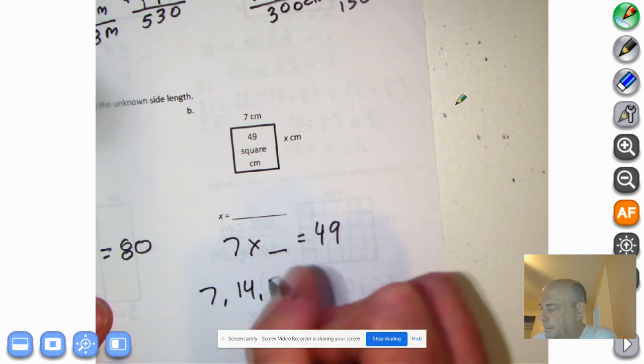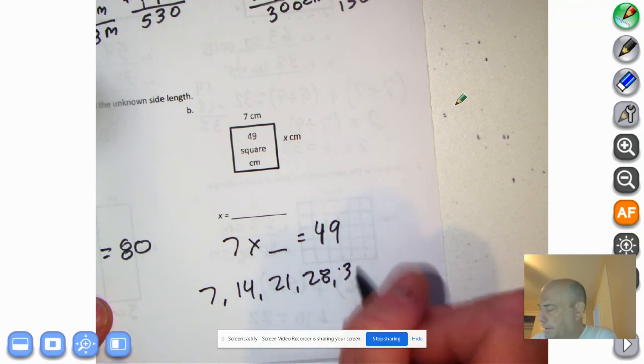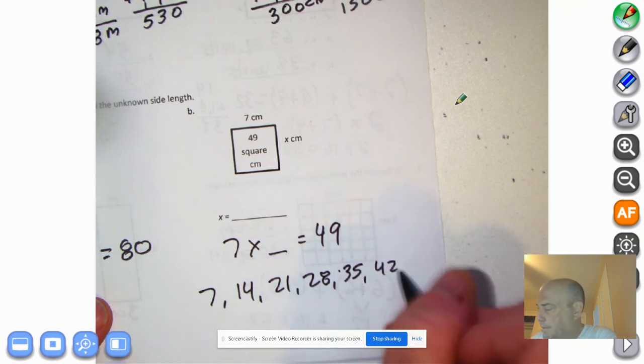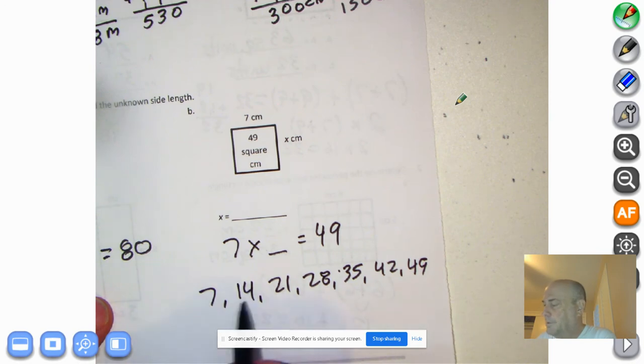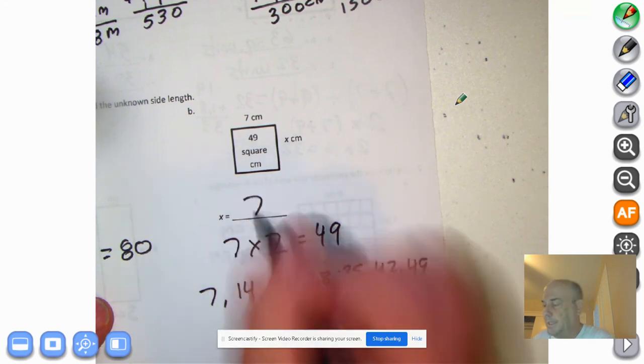Let's review our sevens. Seven, 14, 21, 28, 35, 42, 49. So seven times one, seven times two, seven times three, seven times four, seven times five, seven times six. Seven times seven equals 49. So x equals seven.